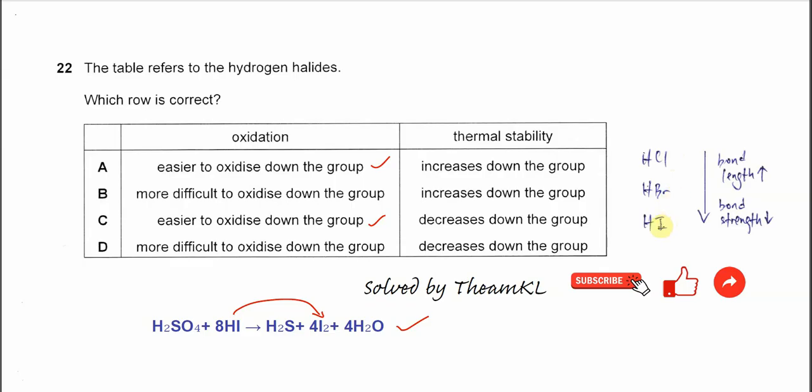When the bond length is longer, the bond strength is weaker, means it's easier to break this bond and the thermal stability will decrease.